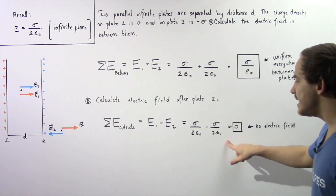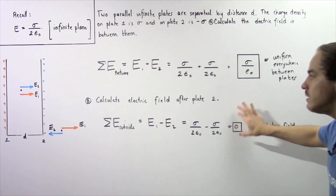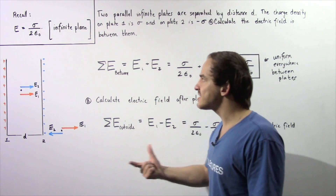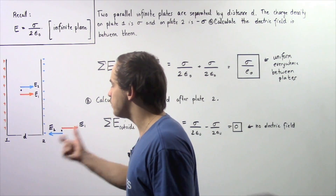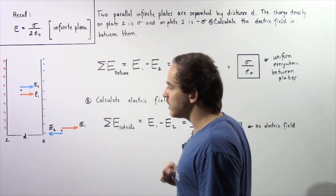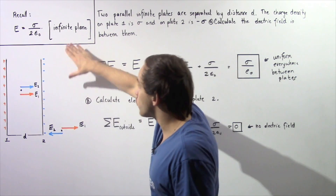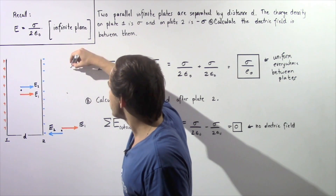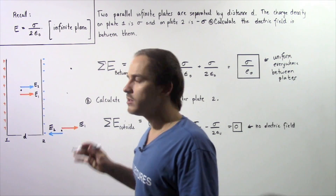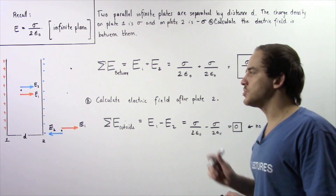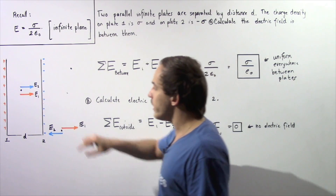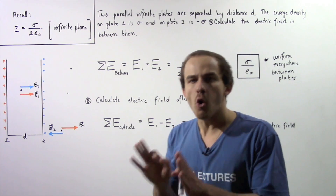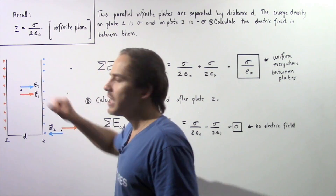They cancel out and the field is zero. There is no electric field as a result of these two infinite plates anywhere outside of the plates — and that holds for both outer sides as well. If we choose any point outside, the electric field will be zero. But if we choose a point in between the two plates, the electric field will be constant no matter where we choose.